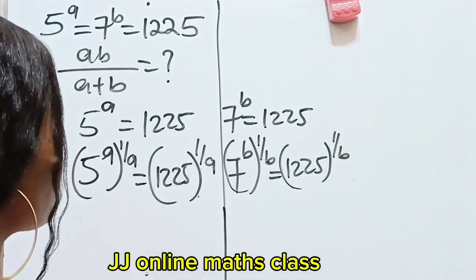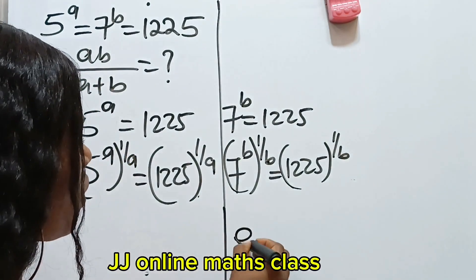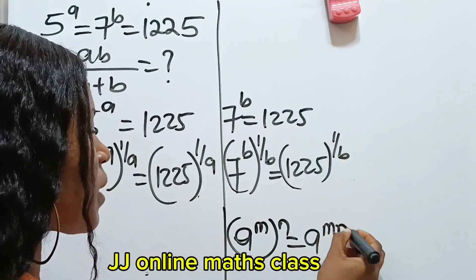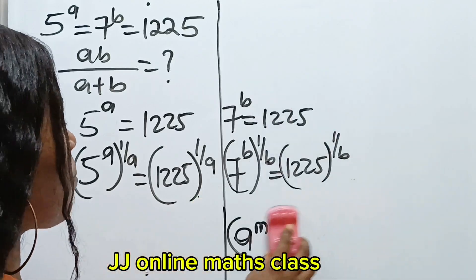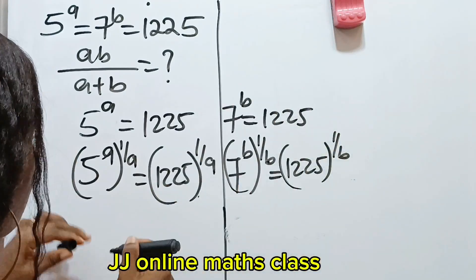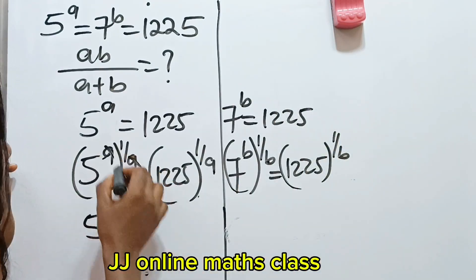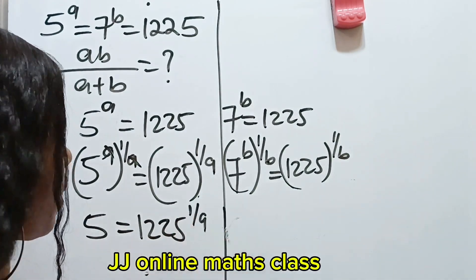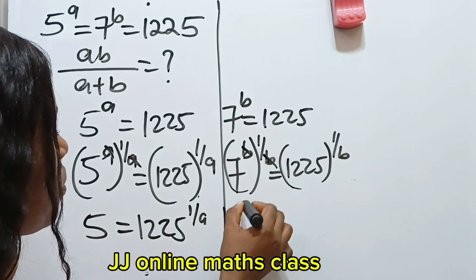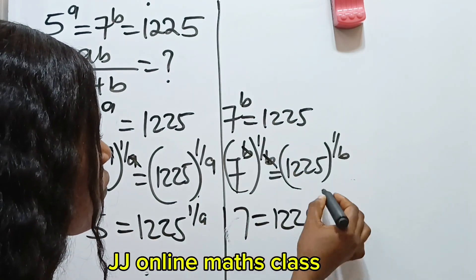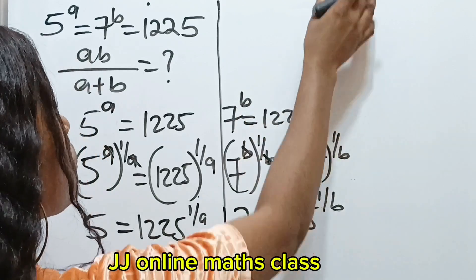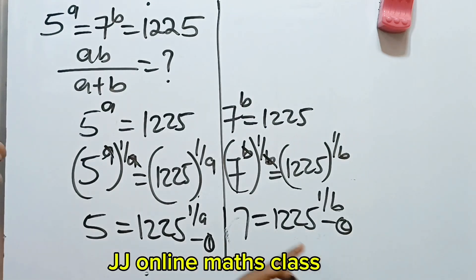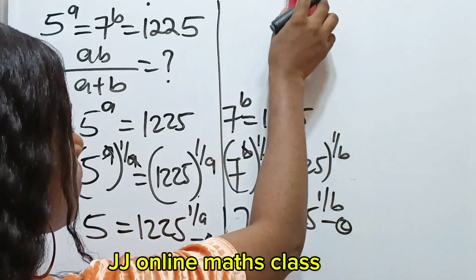Now, according to the law of indices, 5a to the power of 1 over a, when you have a to the power of m raised to the power of n, all you need to do is to multiply the powers together. So we are going to apply that here and when we do that, we have 5 is equal to 1225 raised to the power of 1 over a. Similarly, b, we divide b, we are left with 7 is equal to 1225 raised to the power of 1 over b. Okay, now, if we call this equation 1 and this equation 2, and we multiply equation 1 by equation 2, this is what we are going to have.